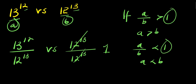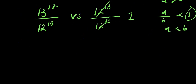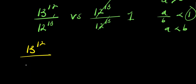So we are now going to concentrate on 13 power 12 divided by 12 power 13, and see whether it gives us a number greater than 1 or less than 1. What I am going to do is write 12 power 13 as 12 power 12 plus 1, since 13 equals 12 plus 1.